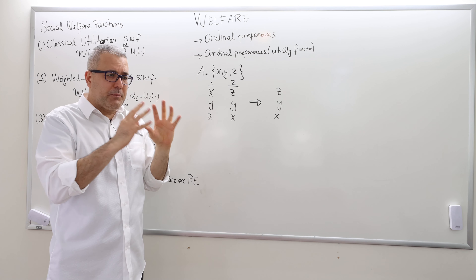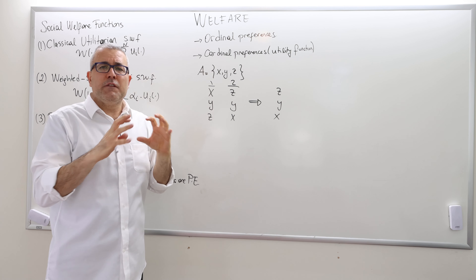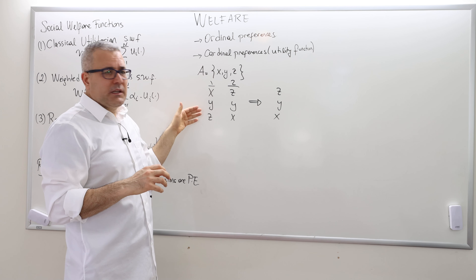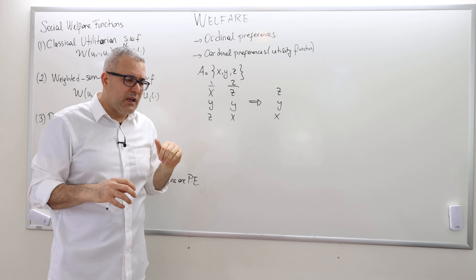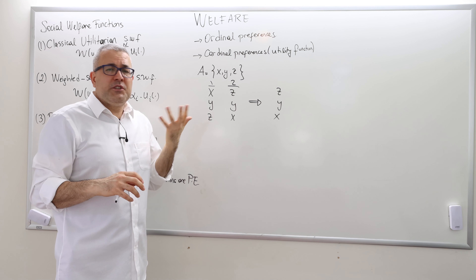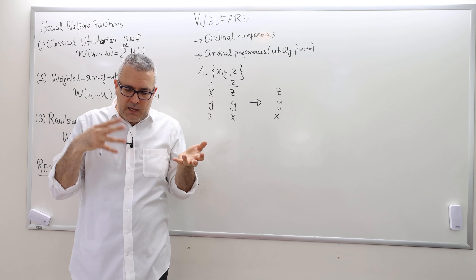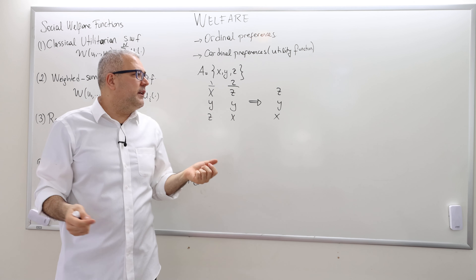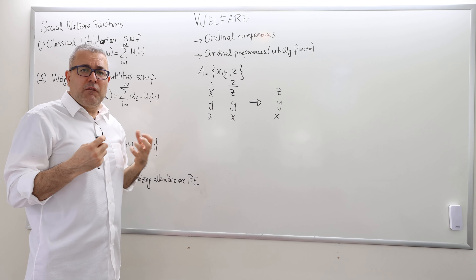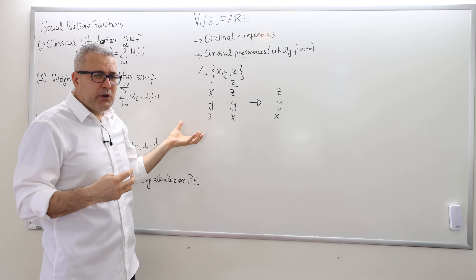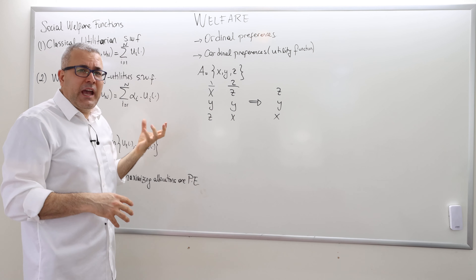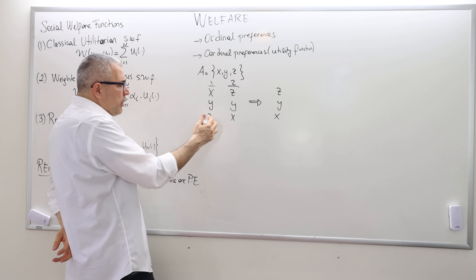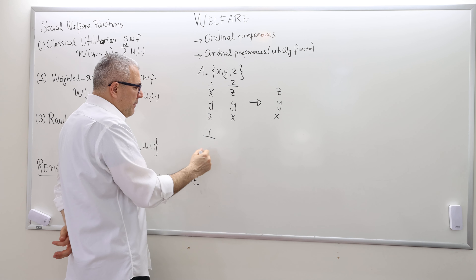However, consider a framework where the government is thinking of a new policy for a specific industry and these are three firms operating in it. The policies x, y, and z are being evaluated, and the government's objective is to find the policy that generates the highest possible total profit. In this case, aggregating ordinal preferences is useless — we should actually aggregate cardinal preferences.